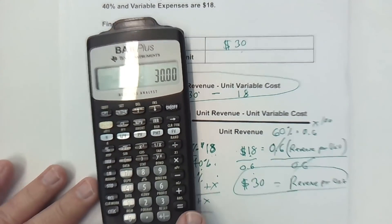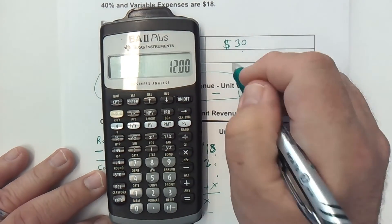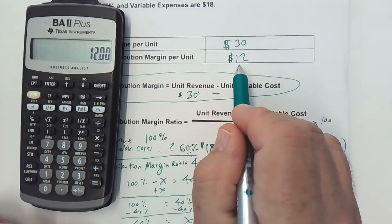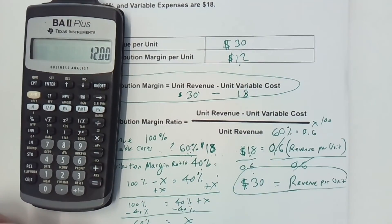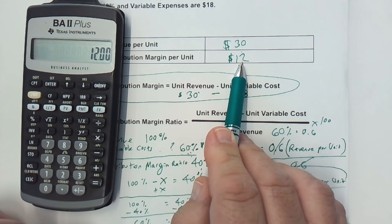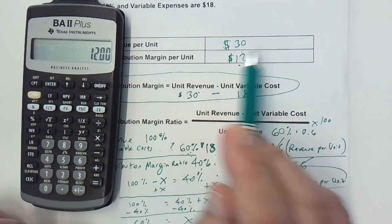We found the revenue per unit. I've already got the $30 on here. All I need to do is subtract out the $18, and that gives us $12 per unit contribution margin. In other words, for every unit that is sold, $12 of that sales price goes toward the bottom line.